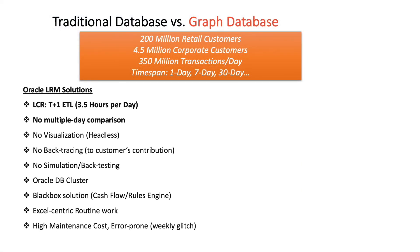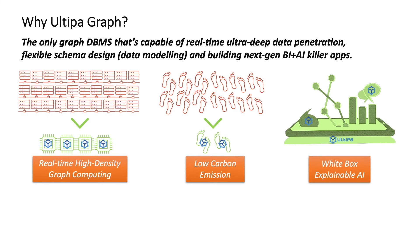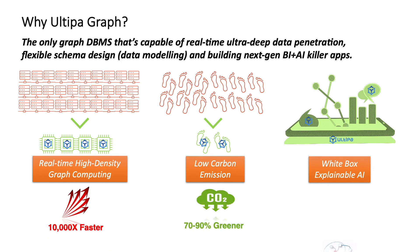In a side-by-side comparison between Oracle's LRM and Ultipas LRM, the performance, the scalability, the capability, the feature richness, and the system stability and maintenance costs — there is no comparison. Ultipas is the only graph database capable of real-time ultra-deep data penetration, flexible schema design in terms of data modeling, and building next-generation BI and AI killer apps. Ultipas is not only fast and green but also white box.